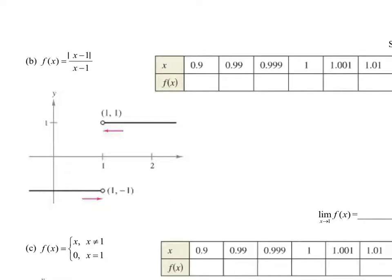The next problem is f(x) equals the absolute value of x minus 1 over x minus 1, and it wants to know what's the limit as x approaches 1. Graphically, as I approach x equals 1 from the left, my y value every single time seems to be negative 1, so as I approach from the left, f(x) approaches negative 1.